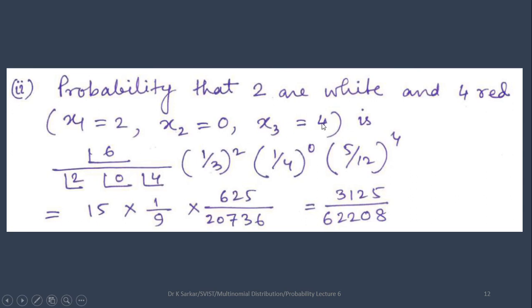Now, let us put all of these in expression 1. Then we will get factorial 6 divided by factorial 2, factorial 0, factorial 4 and let us put p1, p2, p3 and their power as x1, x2, x3 respectively. After calculating, we are getting the answer 3125 divided by 62208.